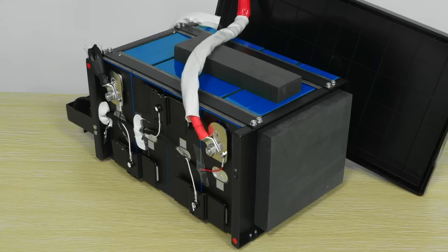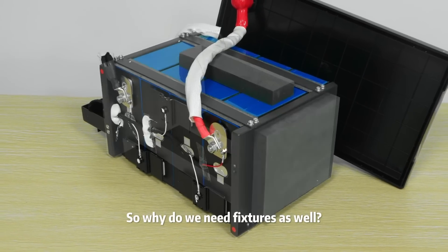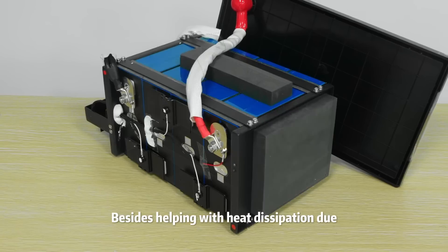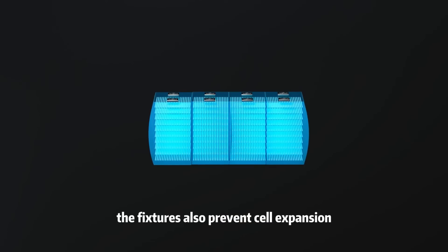Metal Fixture. Earlier, we mentioned that the battery cells have 2-millimeter thick metal end plates on their sides, so why do we need fixtures as well? Besides helping with heat dissipation due to their steel material, the fixtures also prevent cell expansion.